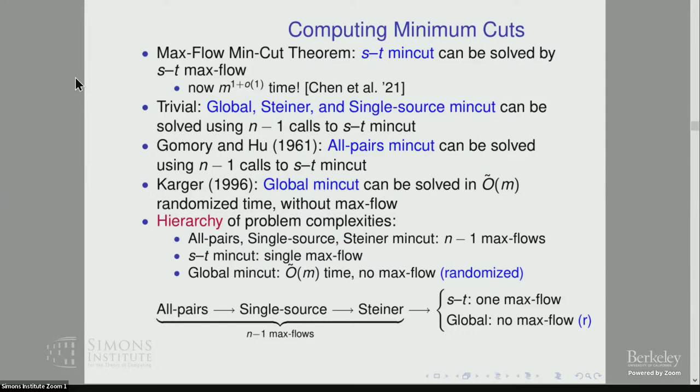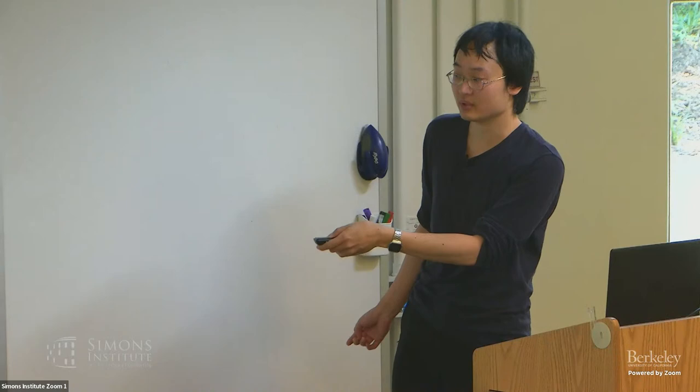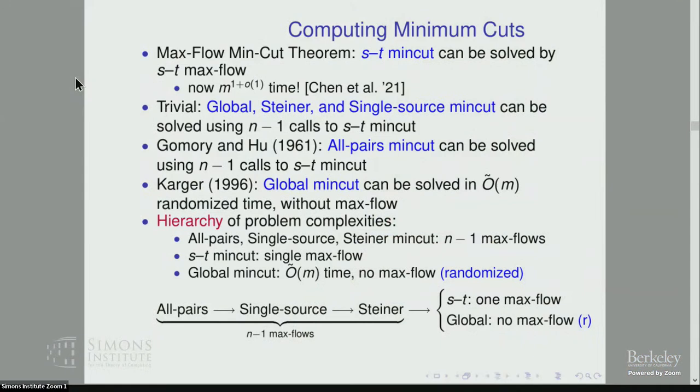We can think of this hierarchy pictorially: each problem in a group reduces from the one before it. ST min cut requires one max flow, and global min cut requires no max flows but only for randomized algorithms. This was the landscape of the min cut problem before our work. In this talk, we'll be surveying recent progress on improving this hierarchy.